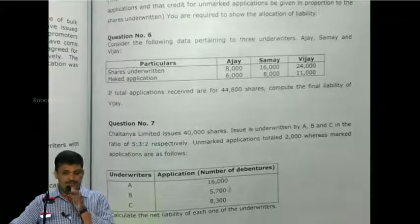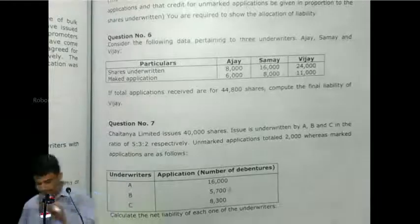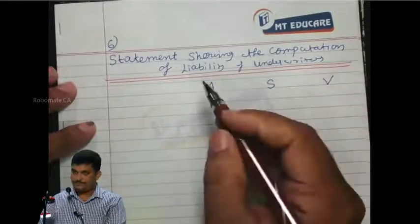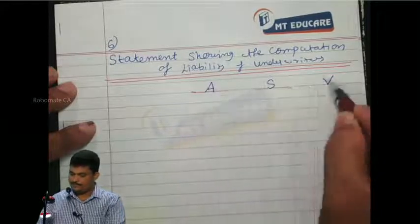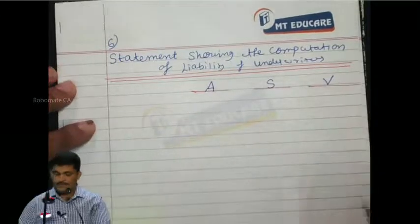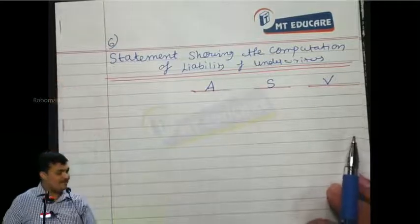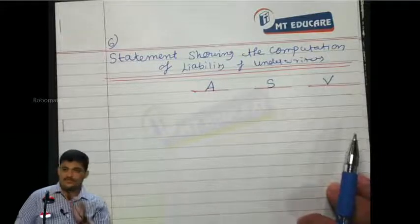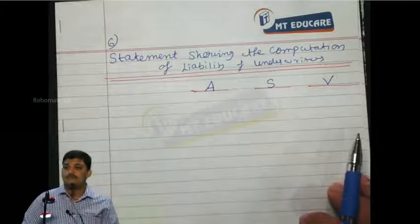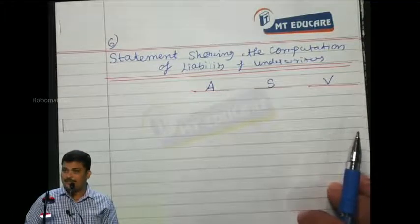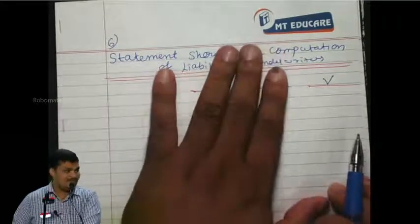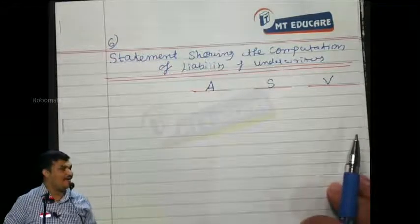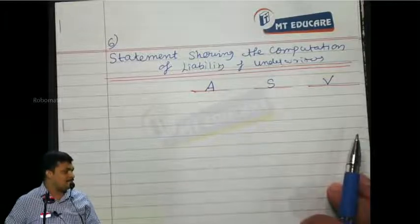Quickly solve the problem. You cannot work out Vijay on an isolated basis. Even if they are asking you the liability of one underwriter, there could be some surplus adjustment. If you take only Vijay's working, then you will be going wrong. Even though the question is only Vijay, you should be going with the entire format. Understood?